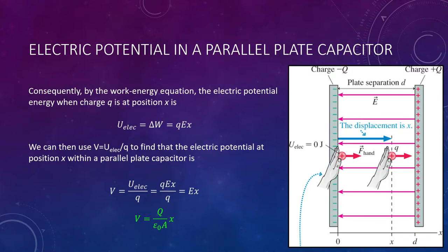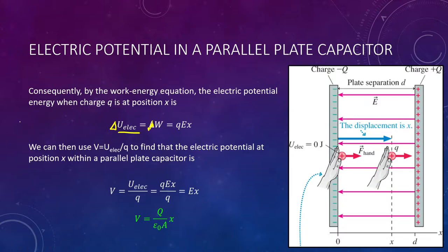We also have the work-energy equation: by definition, the amount of work you do equals your change in energy. In this case, the energy is potential energy. Since our potential energy is zero at the negative plate, there's no delta needed — your electric potential energy of that charge Q is simply equal to the work done to move it there. So not only is your work equal to QEX, but so is your electric potential energy. Work equals the change in energy of the system, where that energy is our potential energy.